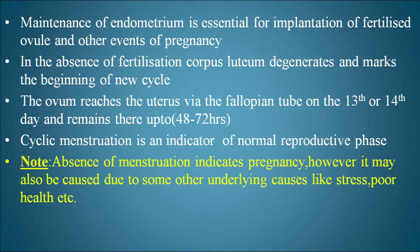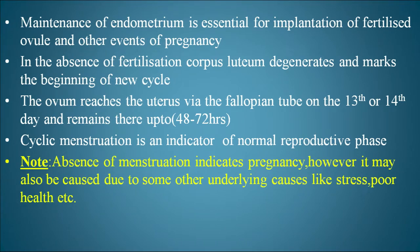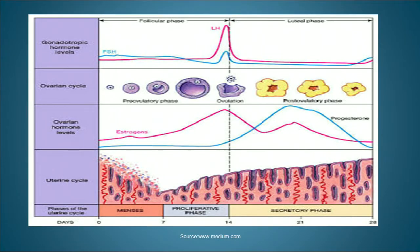The ovum reaches the uterus via the fallopian tube on the 13th or 14th day and remains there for 48 to 72 hours. That is why the mid-cycle is also called the fertile period — days 10 to 17 of the menstrual cycle. Cyclic menstruation is an indicator of a normal reproductive phase. The absence of menstruation indicates pregnancy, but may also be caused by stress, poor health, anemia, or other underlying causes.